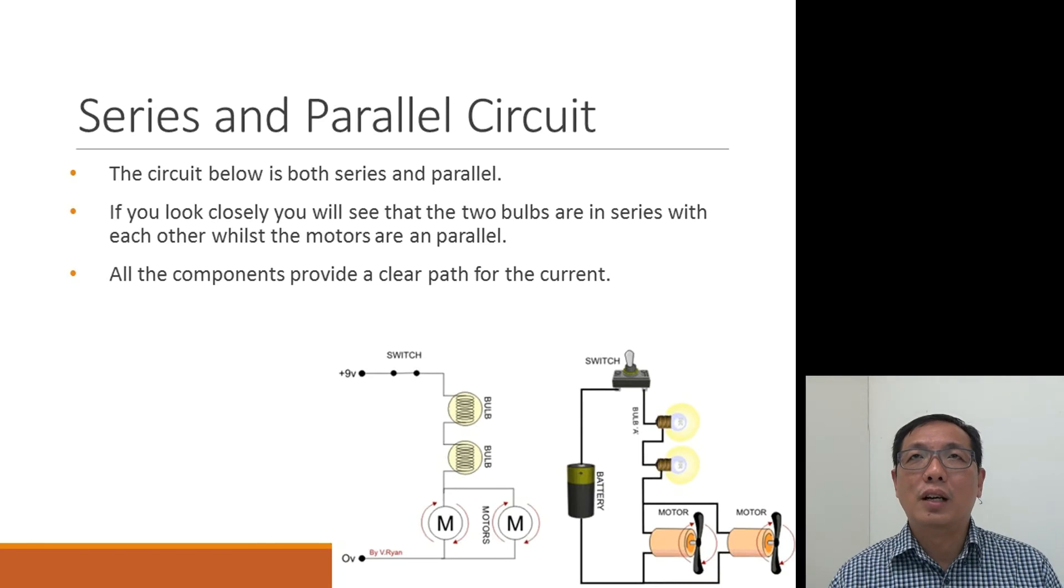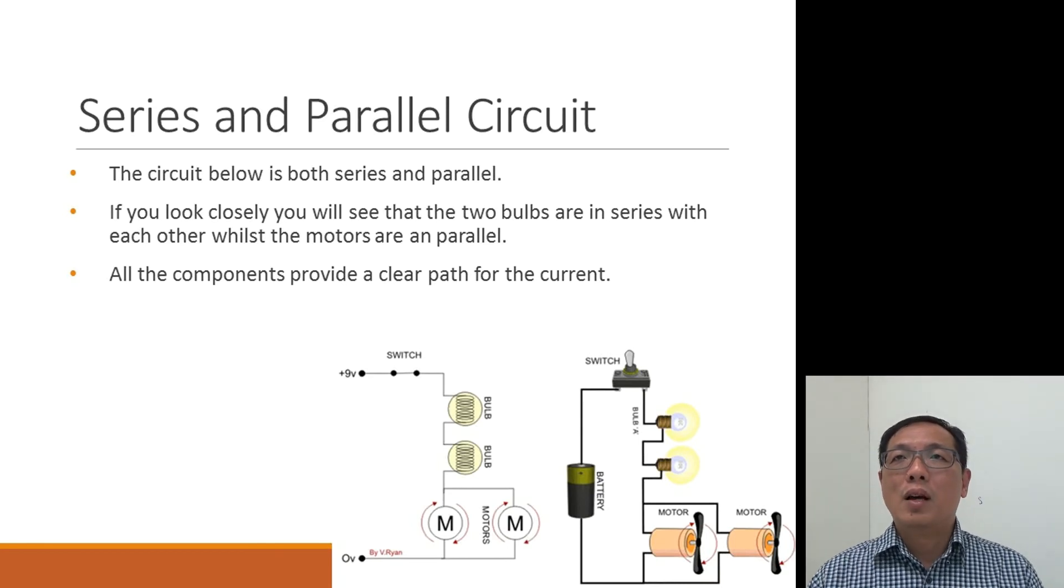You look at this circuit, we have two motors and two bulbs. What happened if one of the motor is blown? Will the whole circuit still work? Answer is yes. The current can flow through the other motor. What happened if one of the bulbs is blown?